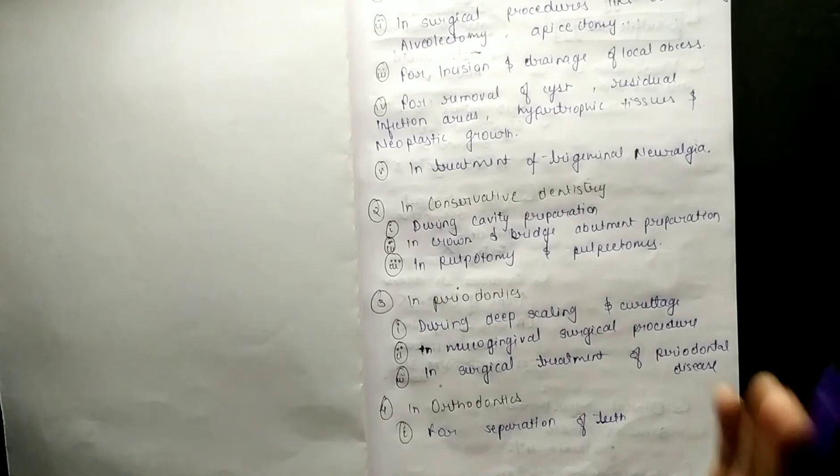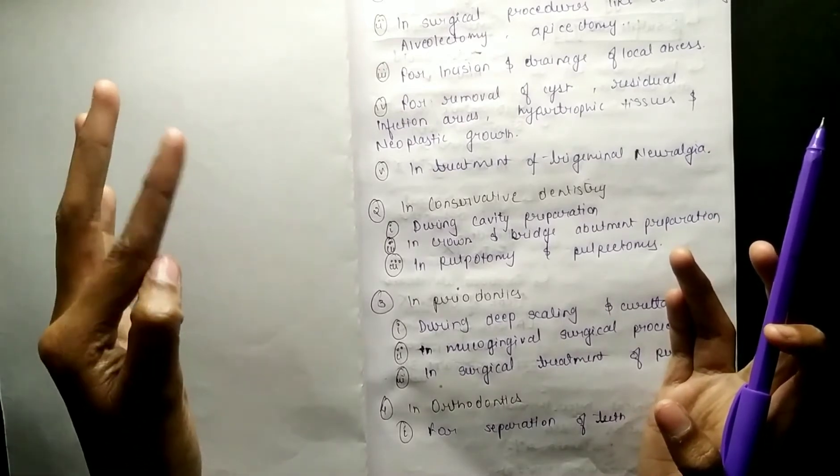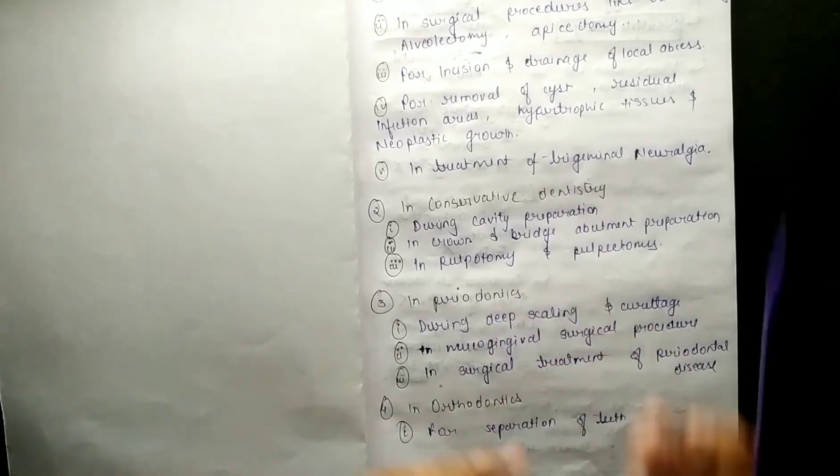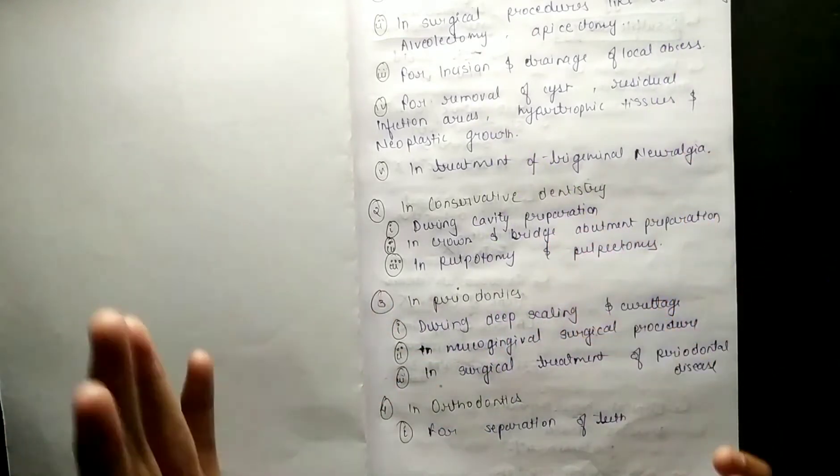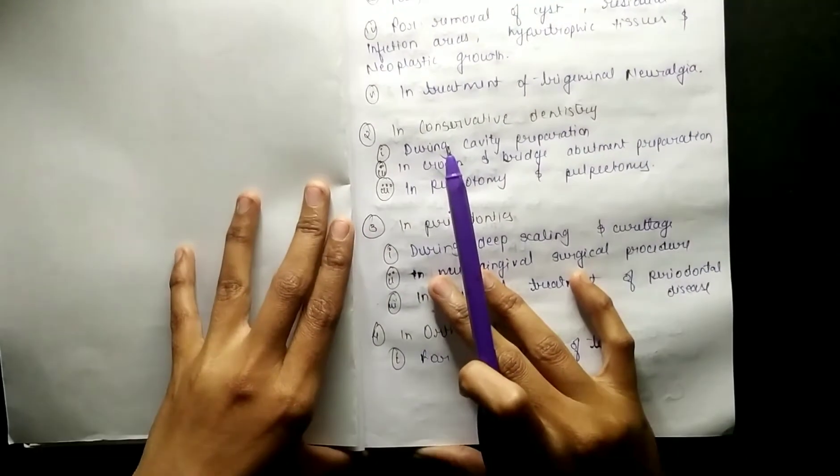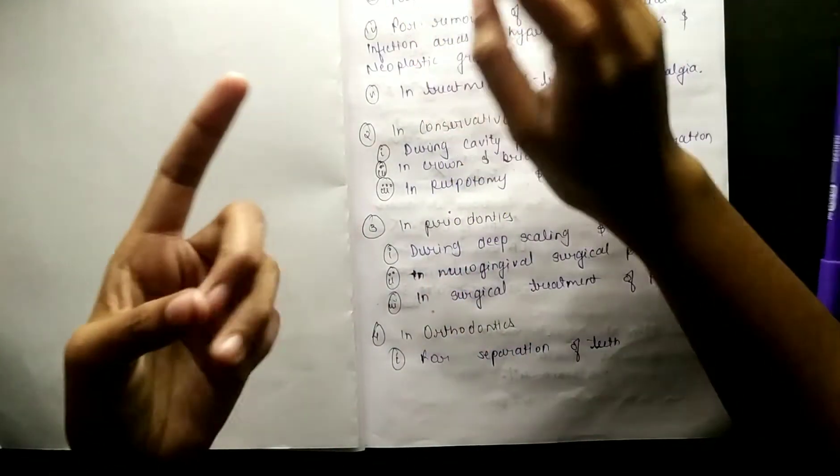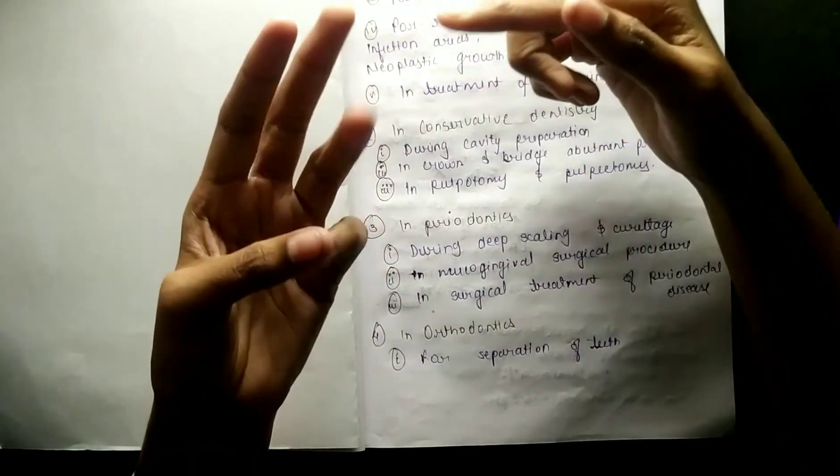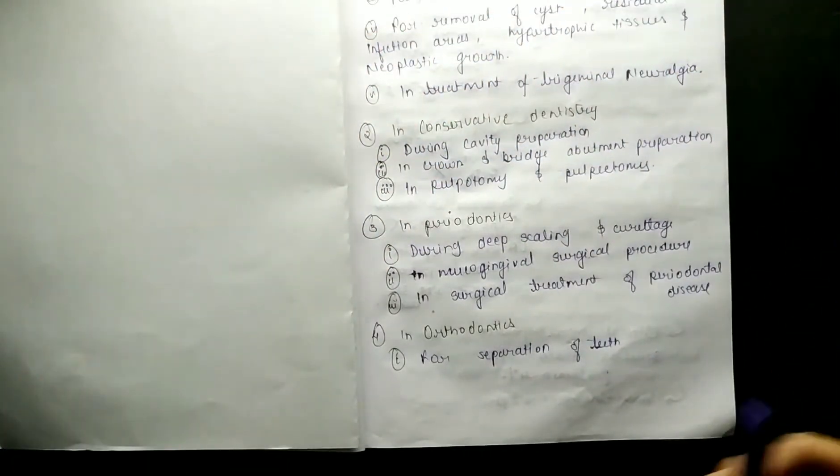So now we are talking about indications. Mainly we are looking at four things: Oral Surgery, Conservative Dentistry, Periodontics, and Orthodontics. We are talking about dentistry here, where you can learn LA. You will need these four departments. First oral surgery, then Conservative Dentistry, Periodontics, and Orthodontics. In these four areas you can learn LA.